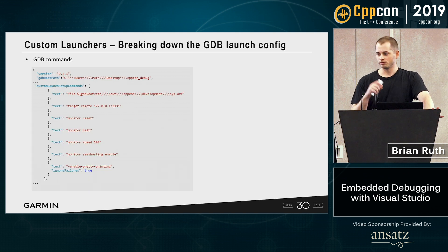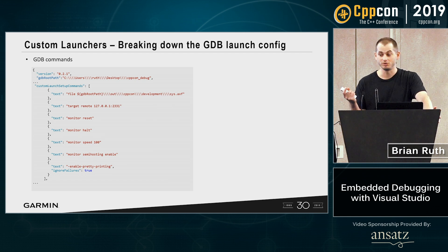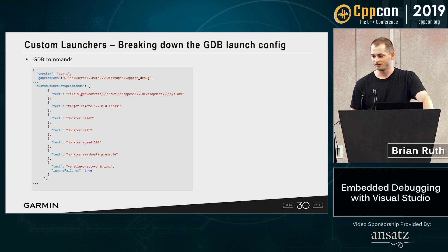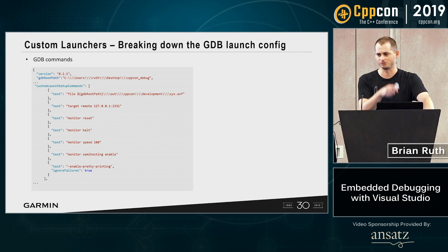Finally, once we get connected to the GDB server, we need to tell GDB what to do. You'll notice the GDB root path up at the top — that's because with all the extra backslashes, the workspace root variable doesn't work for this, so you have to define your own separate one.